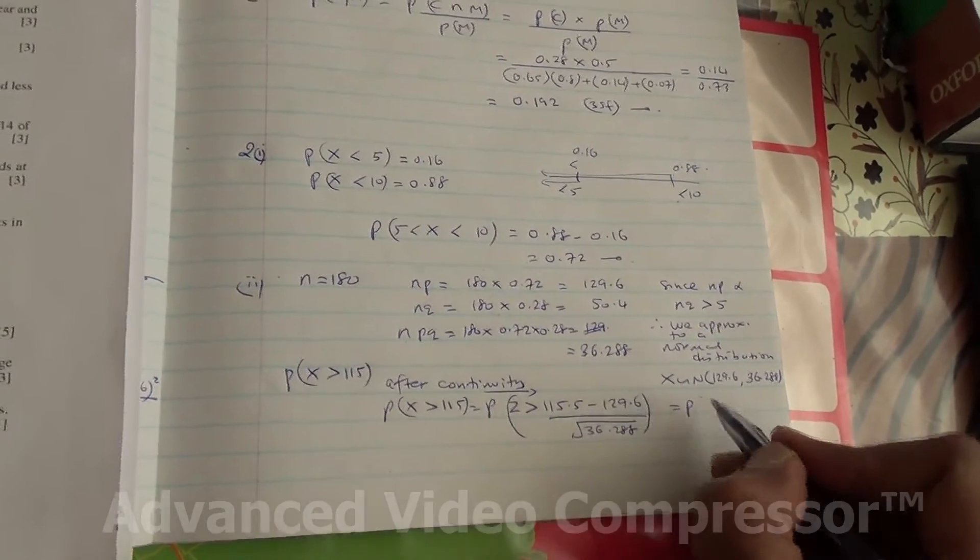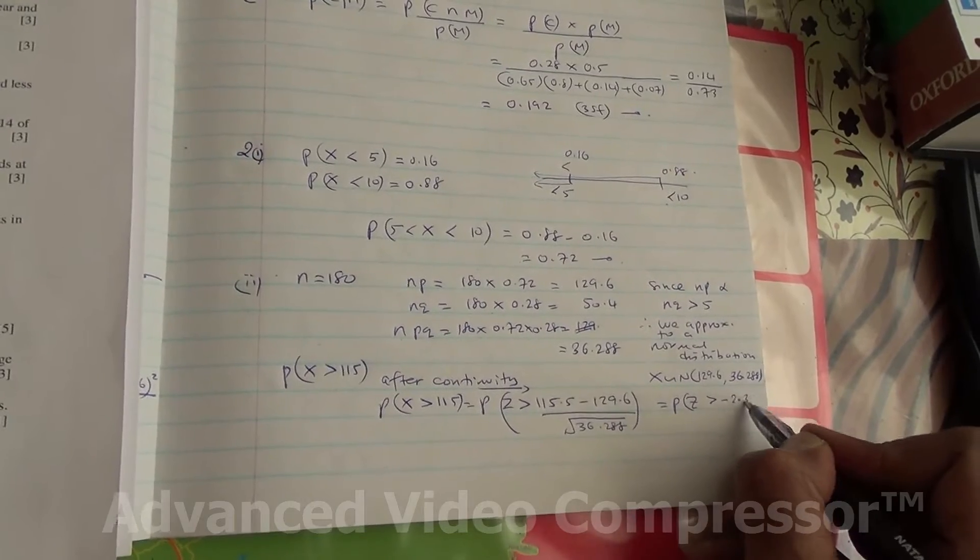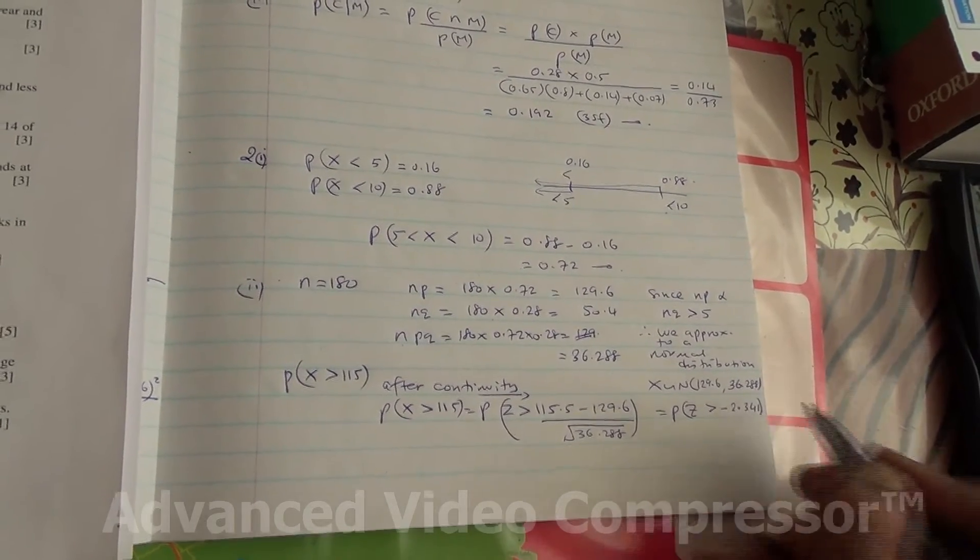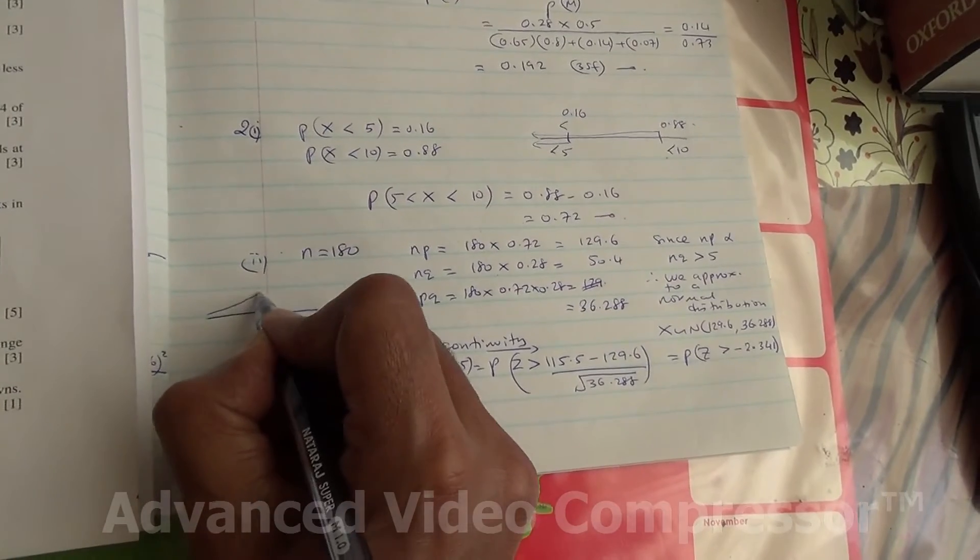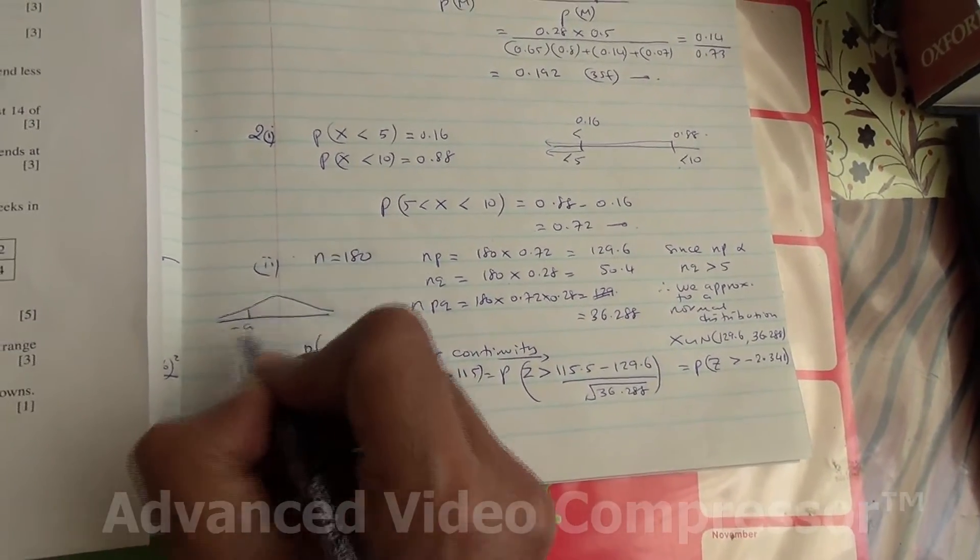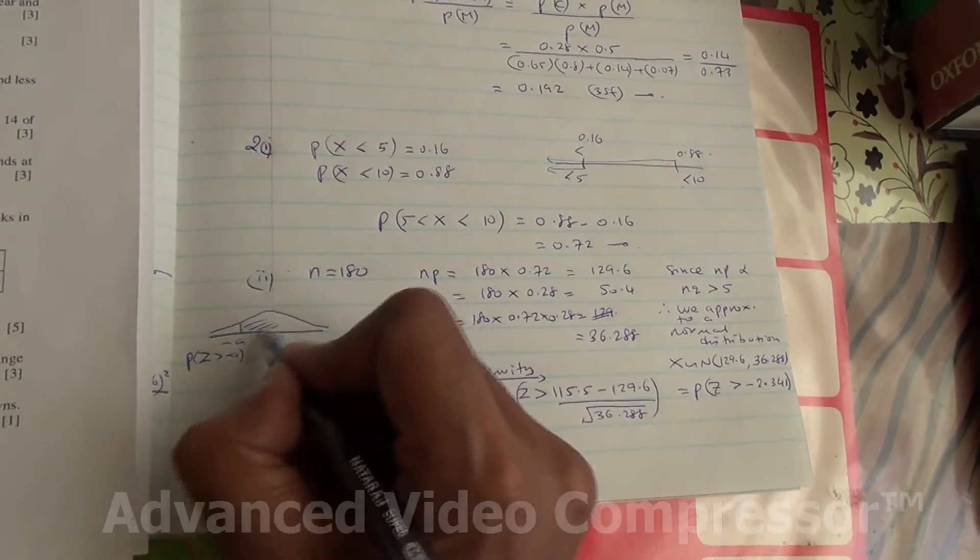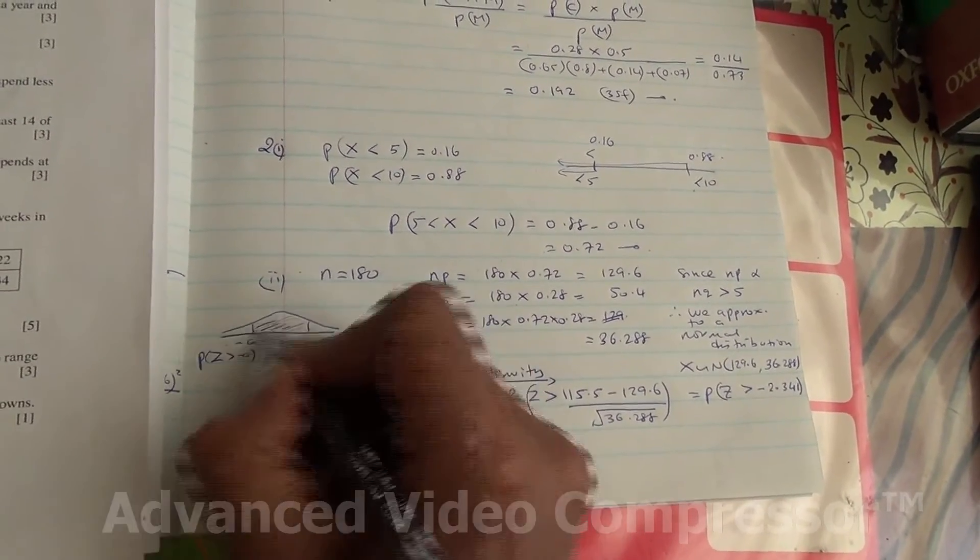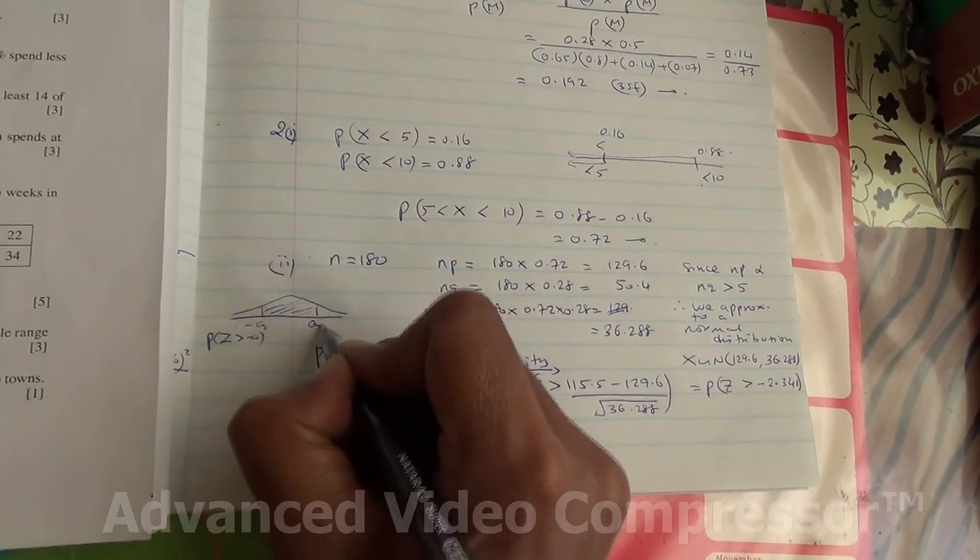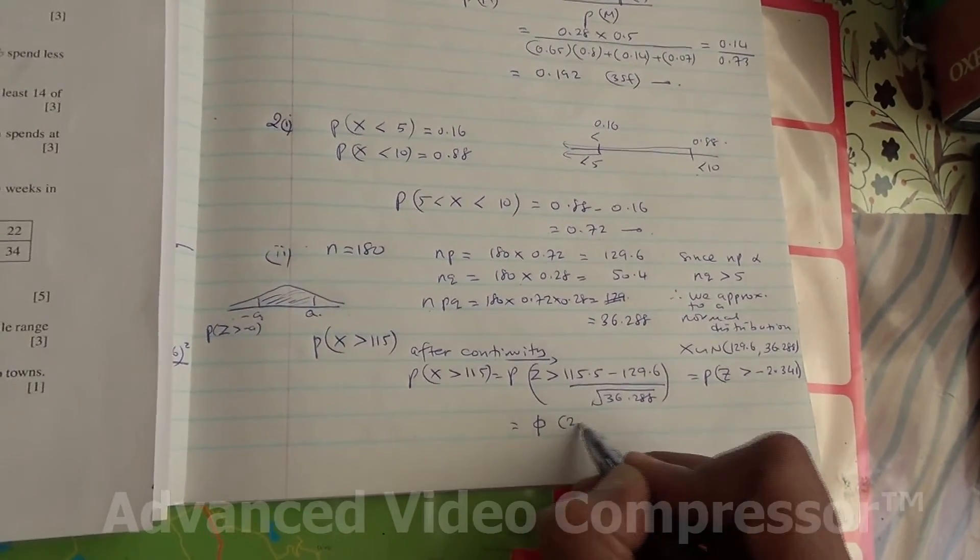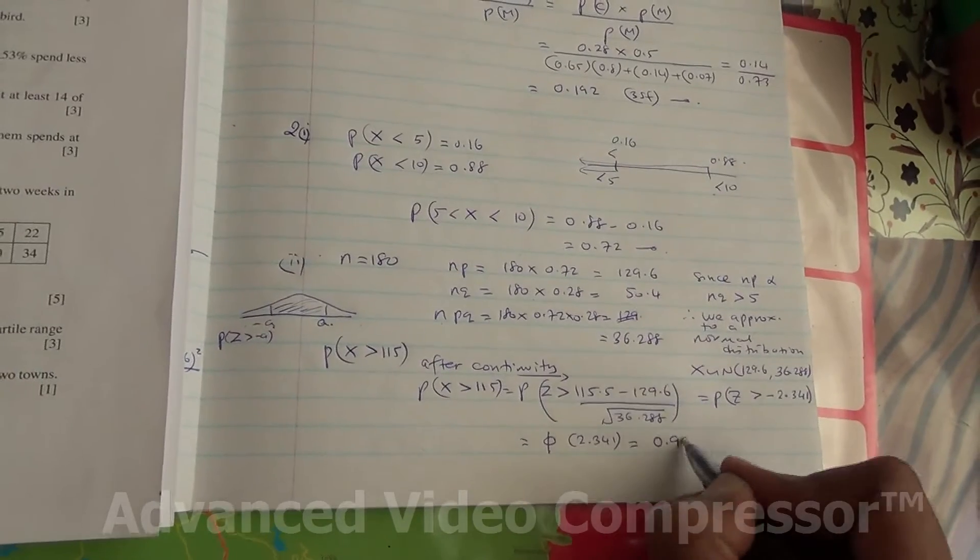If you do that, you're going to get P of Z being greater than minus 2.341. What is this being greater than minus? If you look at your bell curve, if you have minus A here, probability of Z being greater than minus A, we are looking at this region here. If we have to reflect on the other side, it's going to come straight here. Therefore, it is going to be the xi of 2.341. If you look that up from your table, you're going to end up with 0.990.